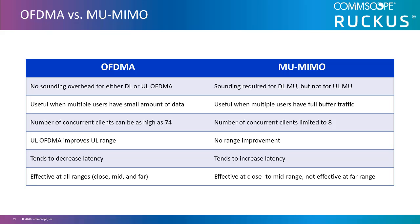Number of concurrent clients: OFDMA allows the AP to talk to multiple devices at the same time. In the 11AC standard with single-user MIMO, I had to talk to only one device at a time. Now I can have parallel conversations with both devices at the same time — from 9 clients with a 20 MHz channel up to 74 clients with a 160 MHz channel. With multi-user MIMO, the number of concurrent clients is limited to 8.